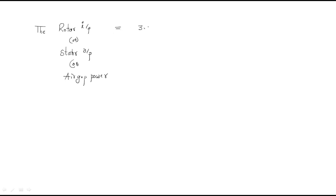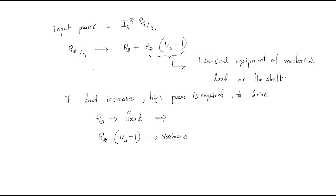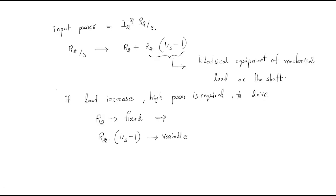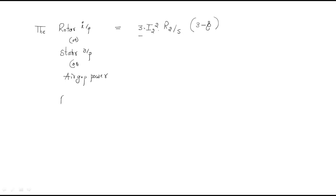The air gap power is given as: Air gap power = 3 × I2² × (R2/s) — the factor 3 is for the three-phase system. This input power to the rotor is converted into two things: one is the loss power and the other is the output power. The rotor loss is: 3 × I2² × R2, which is the fixed value representing rotor copper loss.